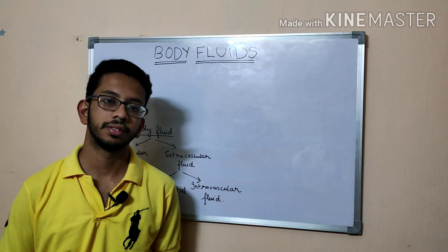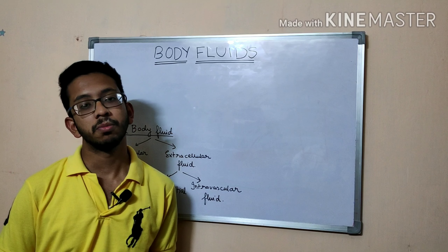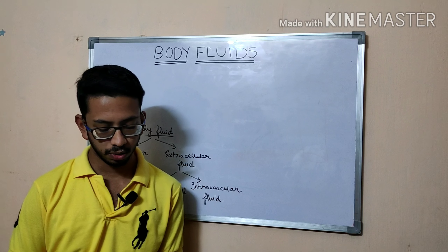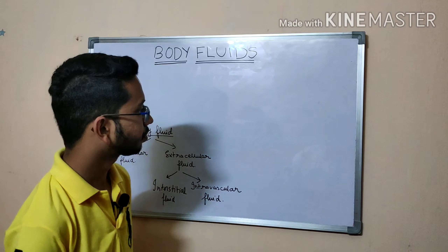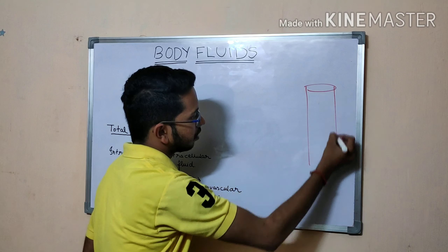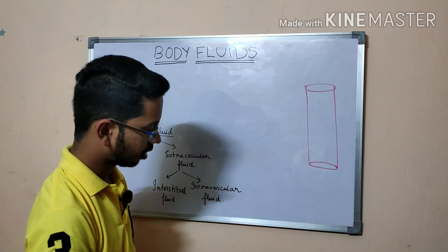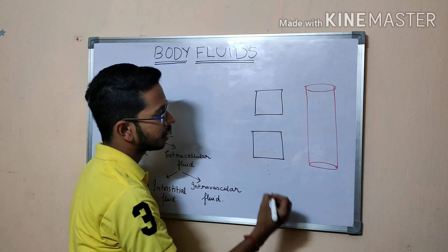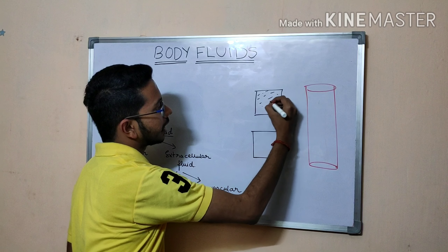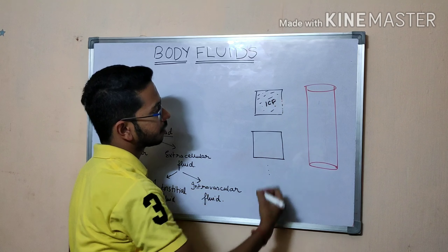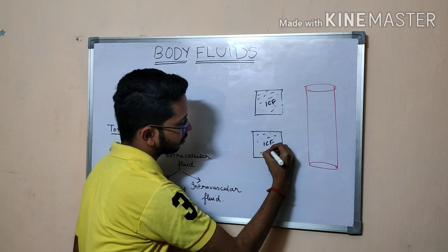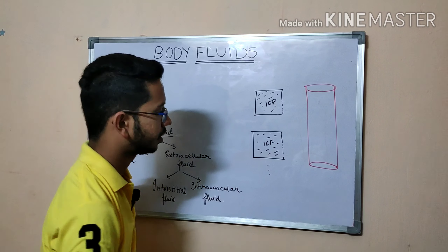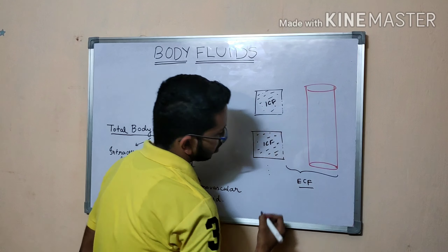Today we will study about body fluids. The total fluid in our body is divided into various compartments. Looking at a diagram, we have a blood vessel with cells outside it. The fluid present inside the cells is known as intracellular fluid, and the fluid present outside the cells is known as extracellular fluid.